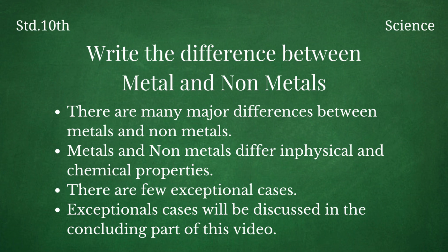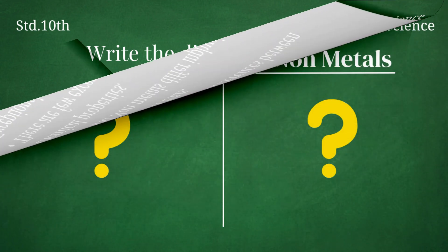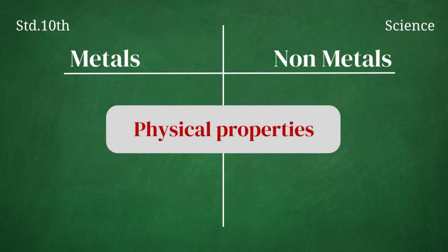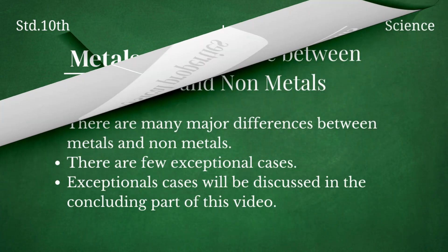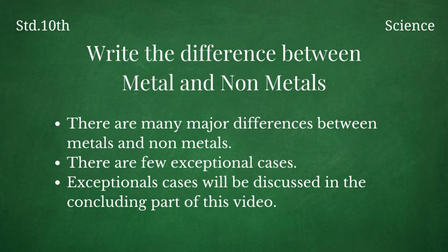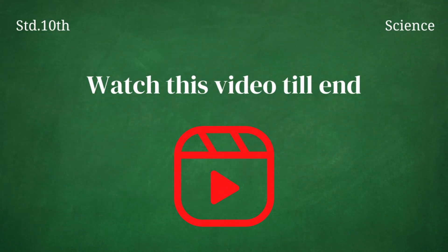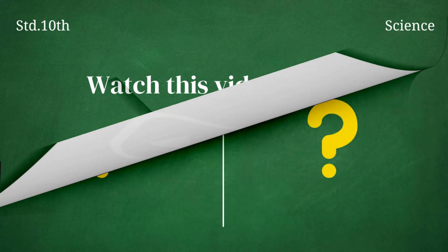Metals and non-metals differ in many aspects in their physical properties and chemical properties. In this video, we are going to discuss only the physical differences between metals and non-metals. There are also few exceptional cases. First, we will deal only with the differences, and the exceptional cases will be discussed in the concluding part of the video. This video is going to be quite interesting, so do watch this video till end.